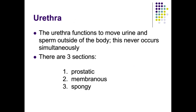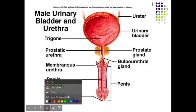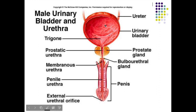The urethra is one continuous tube with three different sections — similar to how the pharynx has the nasopharynx, oropharynx, and laryngopharynx. The three sections are: the prostatic, membranous, and spongy urethra. In the diagram, the bladder is at the top. The trigone — the 'Bermuda triangle' of the bladder — is where the two ureters and the urethral opening are located. The prostatic urethra is at the top, then the very short membranous urethra, and the penile urethra runs the length of the penis.